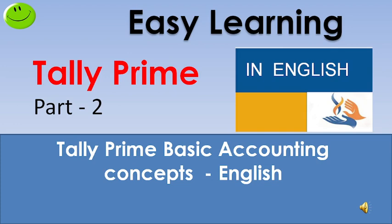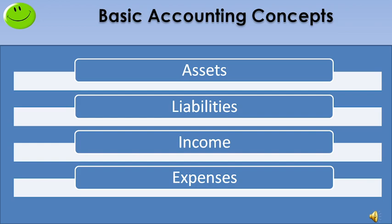Whoever is interested can watch this video. Accounting transactions are classified into 4 categories: Assets, Liability, Income, and Expense. Whatever transaction happens, it falls within one of these categories. Now we are going to see each category individually.